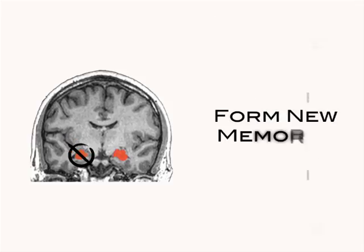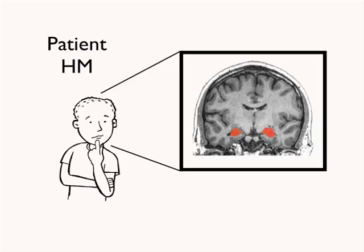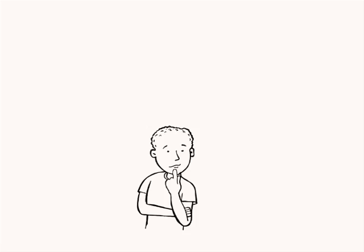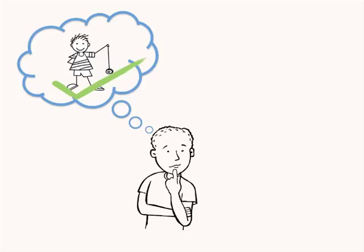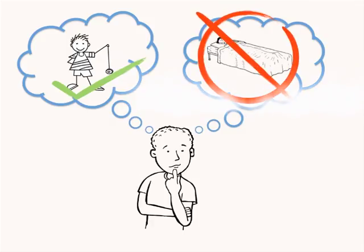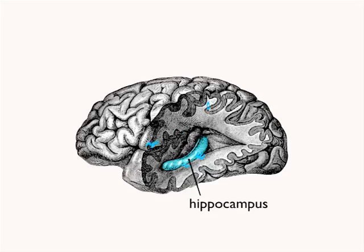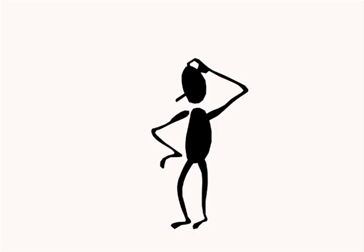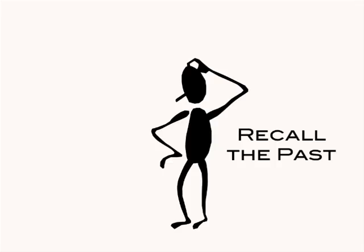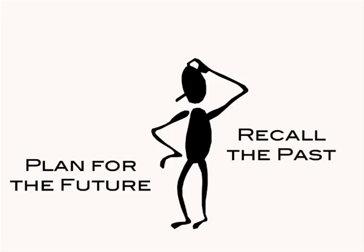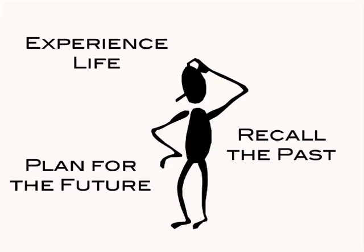Having an intact hippocampus is essential to form new memories, and only one lobe is necessary. One very famous case of hippocampal damage is patient H.M. Doctors removed both of his hippocampi. After the surgery, H.M. was able to recall memories encoded before but not after the surgery. Because of H.M.'s case and others like it, neuroscientists learned about the vital role the hippocampus plays in memory formation. Without the ability to form new memories, you would constantly be living in the present with no ability to recall the past or plan for the future. Can you imagine what that would be like?